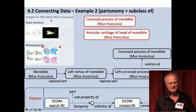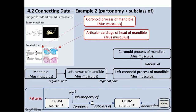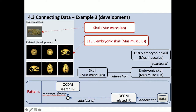There are other knowledge patterns. You might start with images for the mandible of Mus musculus and look for regional parts like left ramus, then parts of that part. Since we have right and left, some images are not annotated with laterality, so left coronary process is a subclass of coronary process — you can follow this pattern to find images related by parts of the mandible. Or you might have a developmental knowledge pattern: starting with the skull, you find that the skull matures from the embryonic skull, which has as a subclass the E18 embryonic skull, so you find images annotated with the E18 embryonic skull.